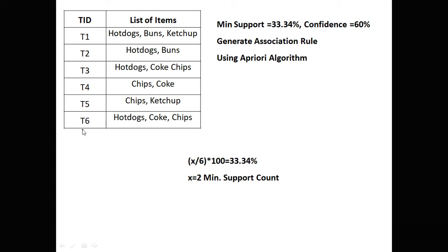Example given: 6 transactions are there. This is a list of items purchased in each particular transaction. Minimum support is 33.34% and confidence is 60%. Generate the association rule using the Apriori Algorithm. Now, all 6 transactions constitute 100% support. So we need to find how many transactions contribute to 33.34% support: x divided by 6 into 100 equals 30, so x equals 2. So 2 is our minimum support count.